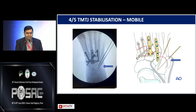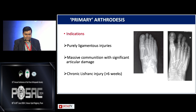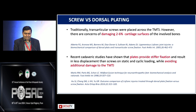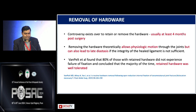There is always controversy about whether to fuse or fix. Indications for primary arthrodesis include purely ligamentous injuries, massive comminution with significant damage, and chronic Lisfranc injuries. The problem with screws is potential damage to articular cartilage in around 2 to 6% of cases, so plates are now frequently used for stiffer fixation and to avoid joint damage. Hardware can be removed at around 4 months post-surgery, allowing physiological joint motion, but this risks late diastasis if the ligament hasn't healed sufficiently.